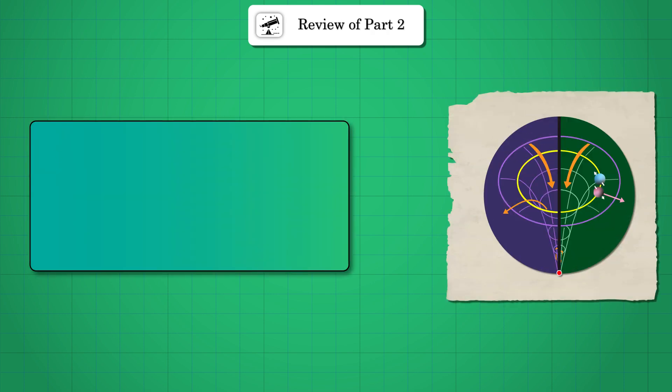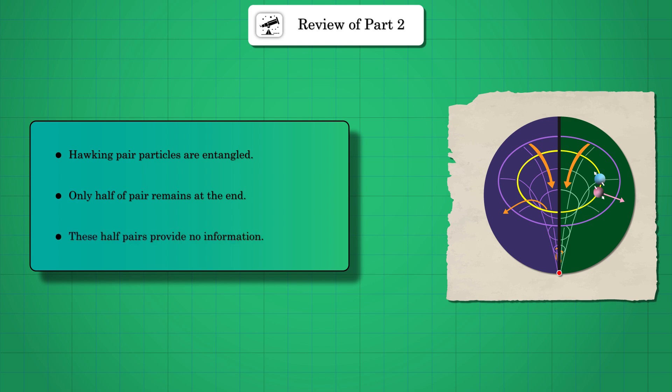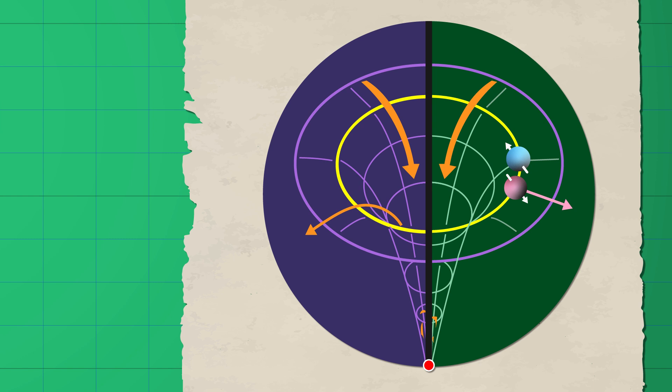The extremely non-trivial feature of Hawking pair particles is that they are maximally entangled with each other. However, we only have half of the pairs left at the end of the evaporation. These half pairs can provide no information about the original stuff that formed the black hole.